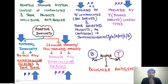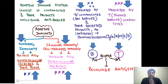Cell-mediated immunity is mediated by T lymphocytes — the term T is used because they are thymus-derived. Both B and T lymphocytes have certain receptors on their surface, and these receptors are going to recognize the antigen.